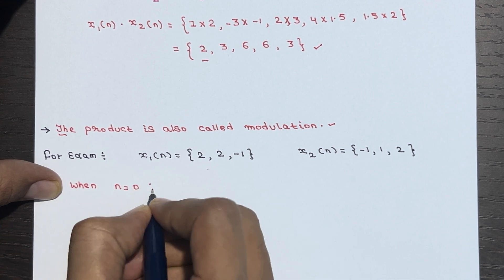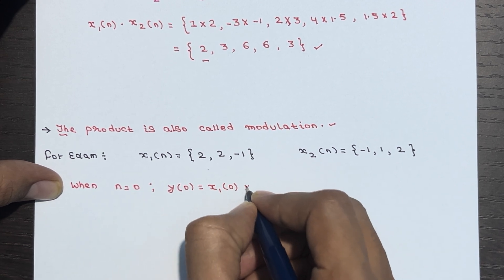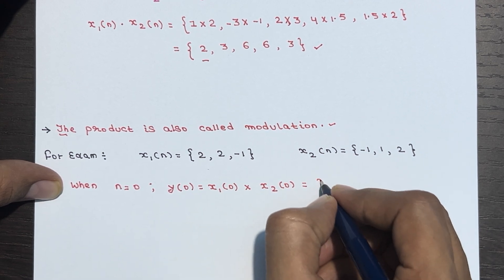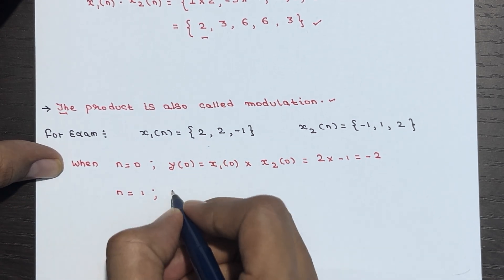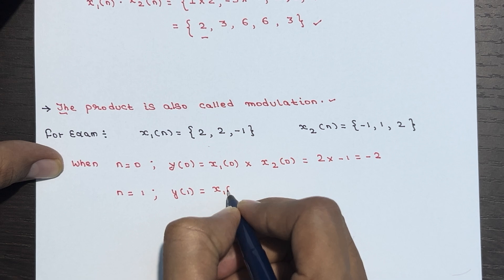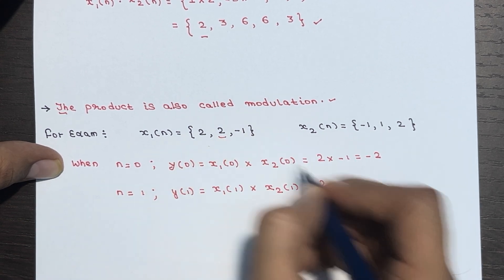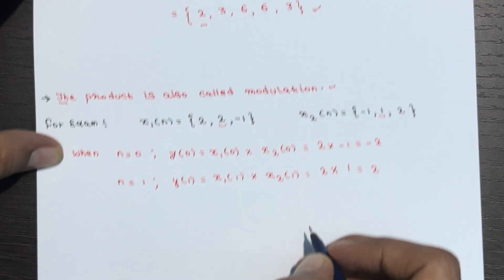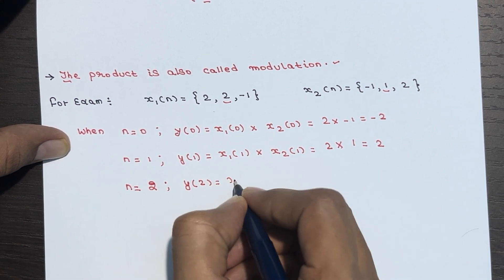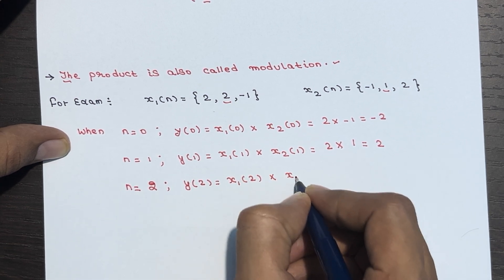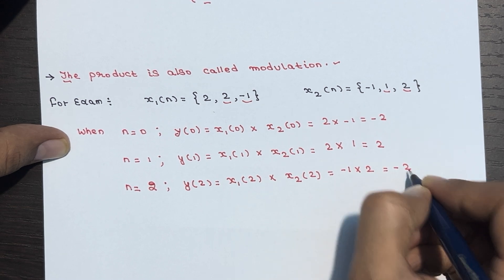When n=0, y(0) = X1(0) × X2(0) = 2 × (-1) = -2. When n=1, y(1) = X1(1) × X2(1) = 2 × 1 = 2. When n=2, y(2) = X1(2) × X2(2) = (-1) × 2 = -2.